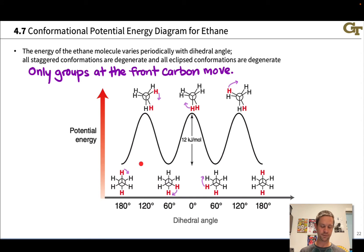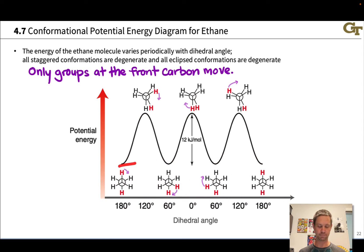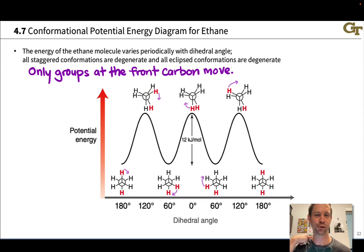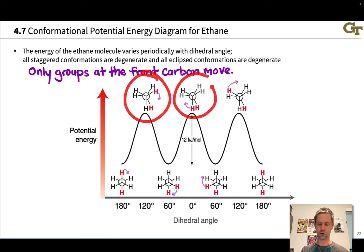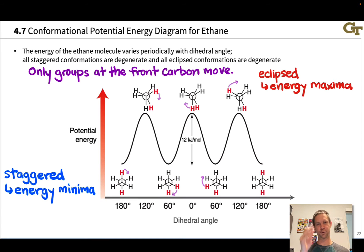All of the staggered conformers are equivalent to each other — they're all at the same energy, because they all have C-H bonds at a 60-degree dihedral. There's nothing special about the red C-H bonds; this is just a way to follow the dihedral angle. The same applies to all the eclipsed structures — they're all equal in energy, each having three C-H bonds eclipsing. The staggered conformers are the energy minima, and the eclipsed conformers are the energy maxima — the transition states in going from one staggered conformer to another.